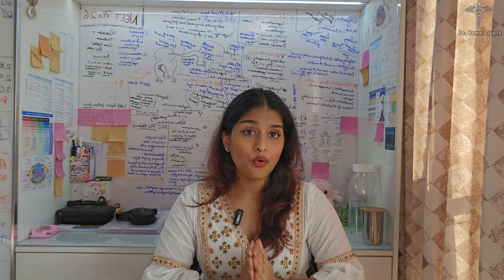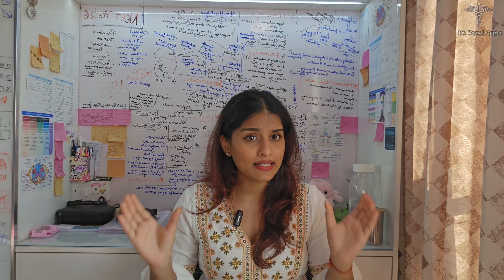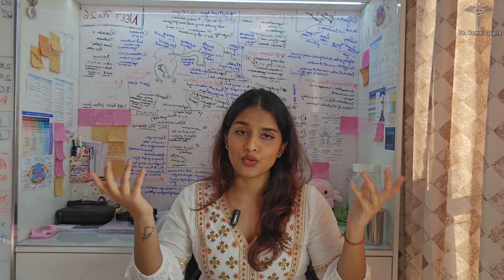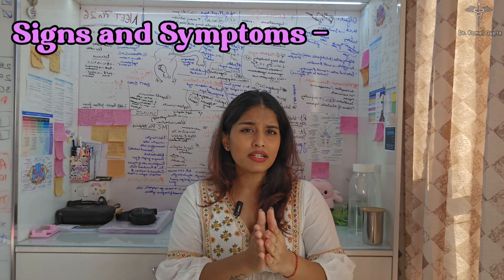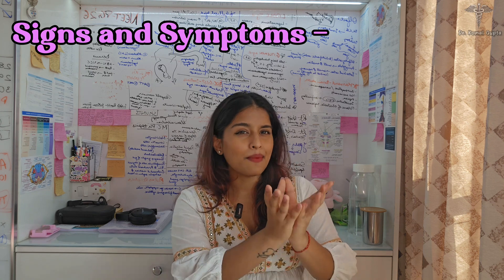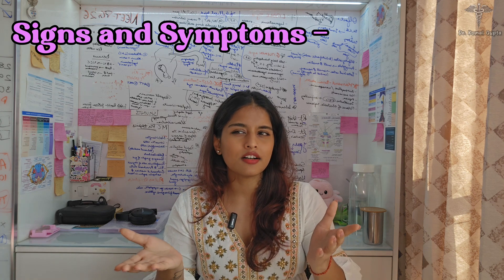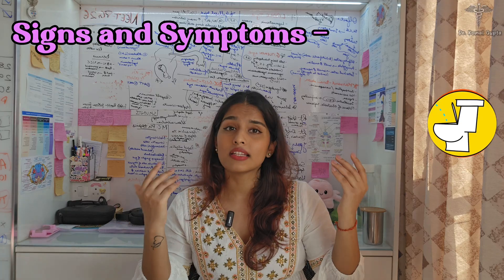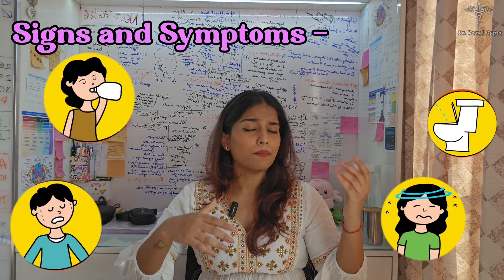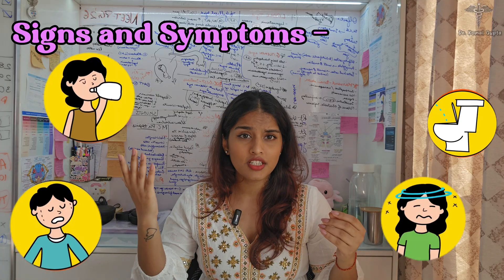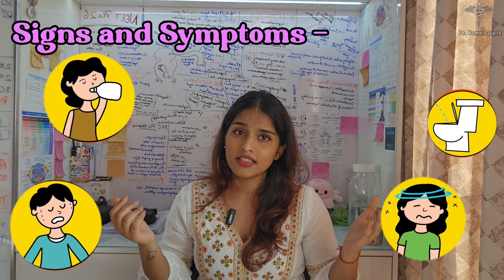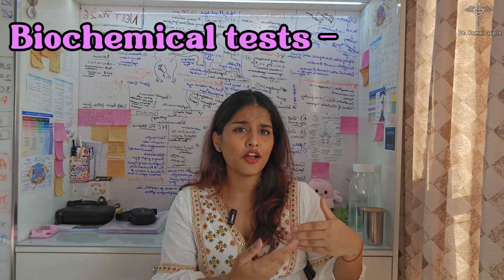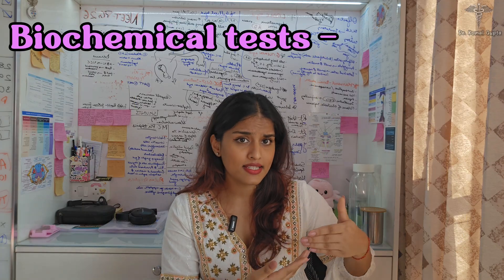Now let's discuss some early signs and tests that can help in diagnosing diabetes. Diabetes mostly manifests as frequent urination especially at night, increased thirst, fatigue, blurry vision, slow wound healing, and unexplained weight loss — especially in Type 1.